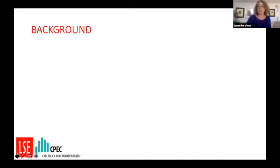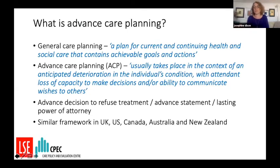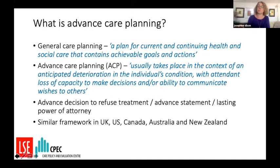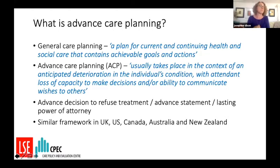Just some background for people who might not be aware, to explain what advanced care planning is. General care planning is planning for current and continuing health and social care. Advanced care planning differs in that it involves expressing preferences for care in possible future health scenarios where you may not be able to speak for yourself, and it's usually undertaken where there's an expectation of significant health deterioration.